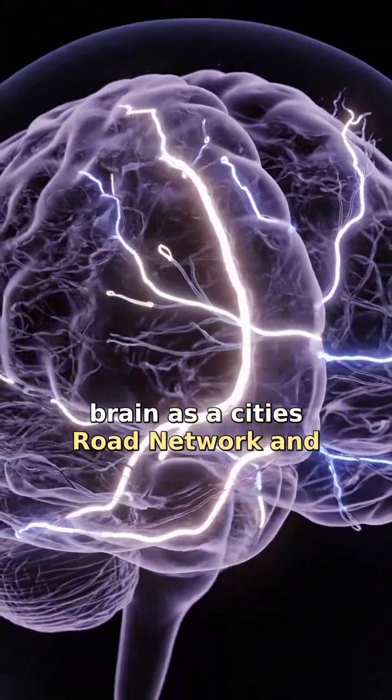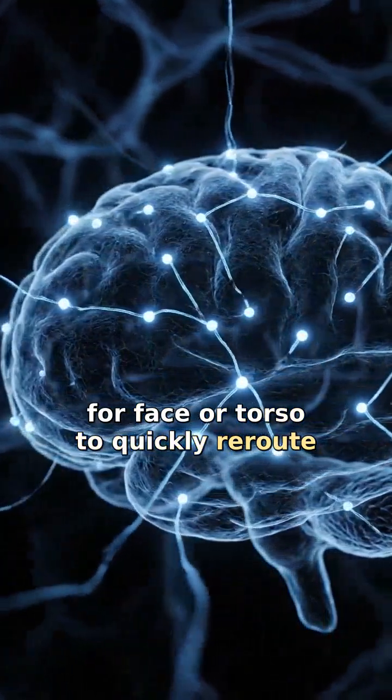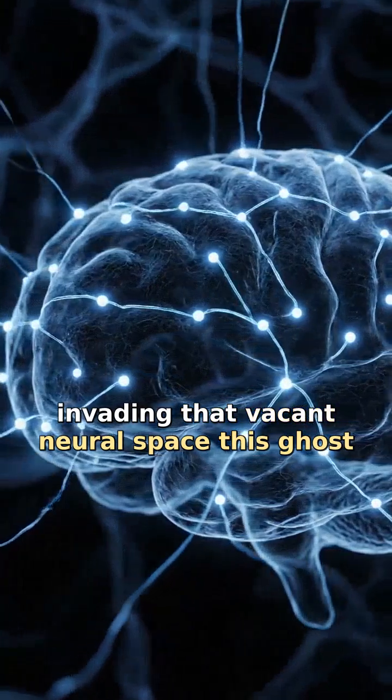Picture your brain as a city's road network. An unused pathway prompts neighboring areas, like those for face or torso, to quickly reroute, invading that vacant neural space.